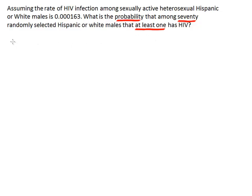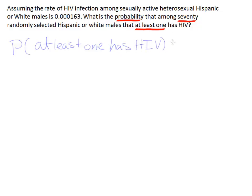Let's write a probability statement out to start. We'll have the probability that at least one person has HIV out of the group of 70. Whenever you have the phrase 'at least one' in a problem, you can evaluate the problem by solving the expression one minus the probability of none.